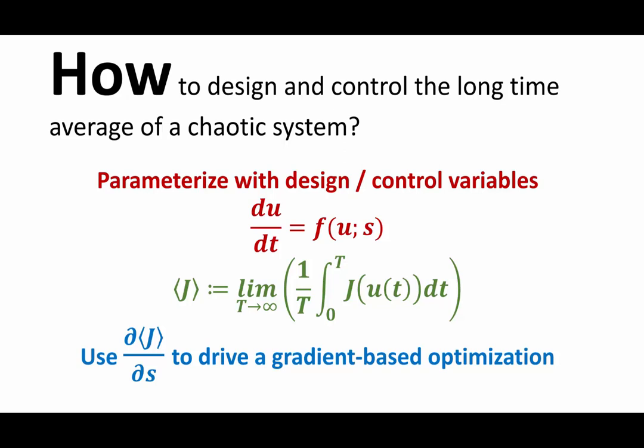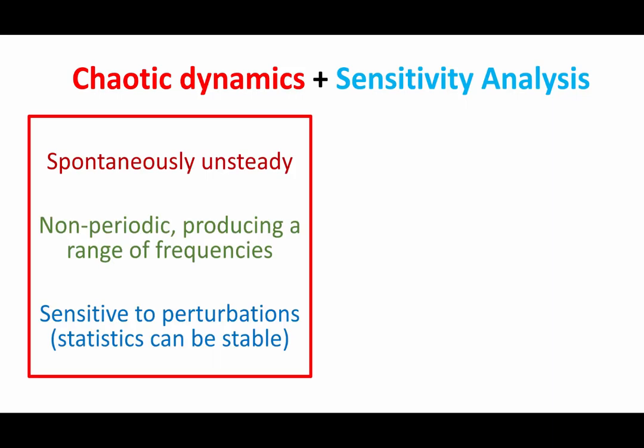And a lot of aerodynamic design—if you look at the wings of typical airplanes, a lot of them, especially the newer ones, are designed using gradient-driven optimization. What I want to do is to be able to extend this kind of gradient-based optimization and design to chaotic dynamics, which is spontaneously unsteady, non-periodic, produces a range of frequencies, and very sensitive to perturbations, but the statistics can be stable.